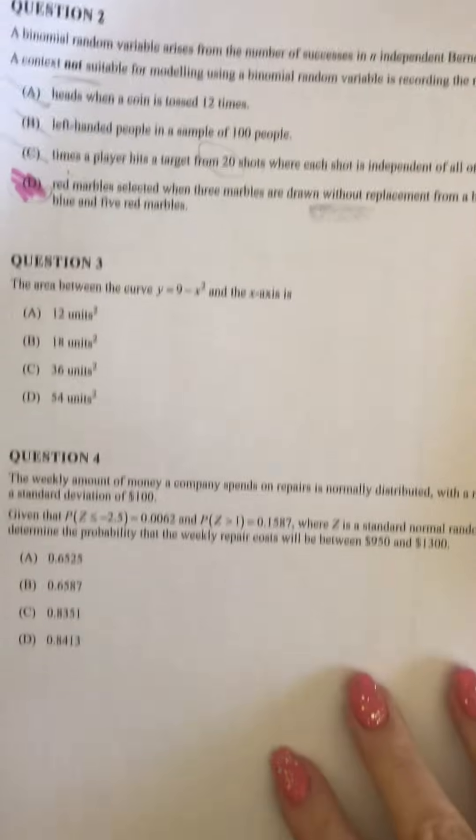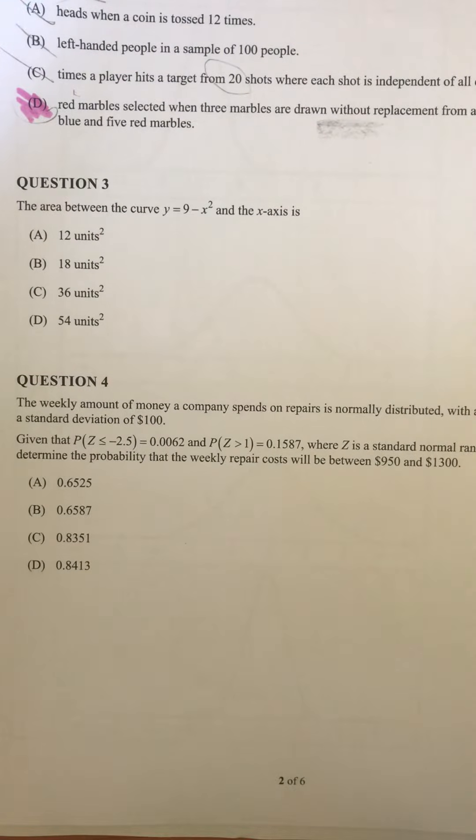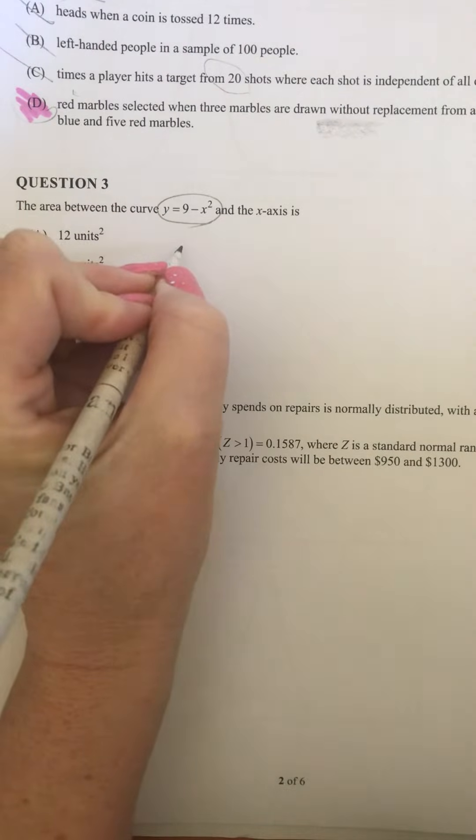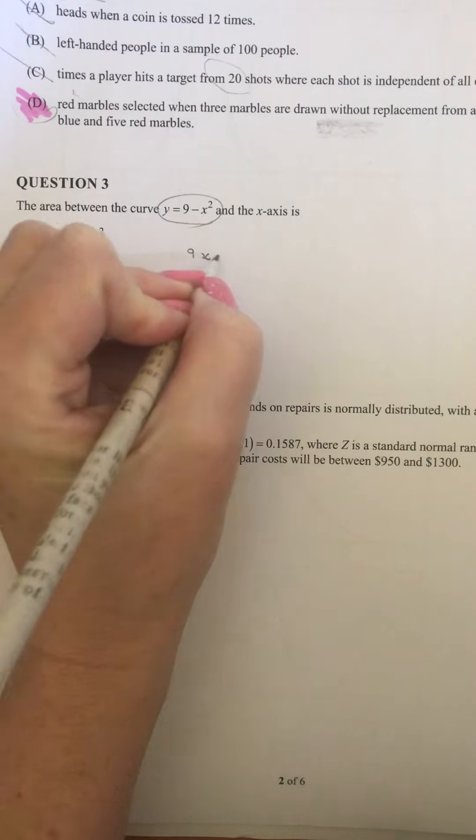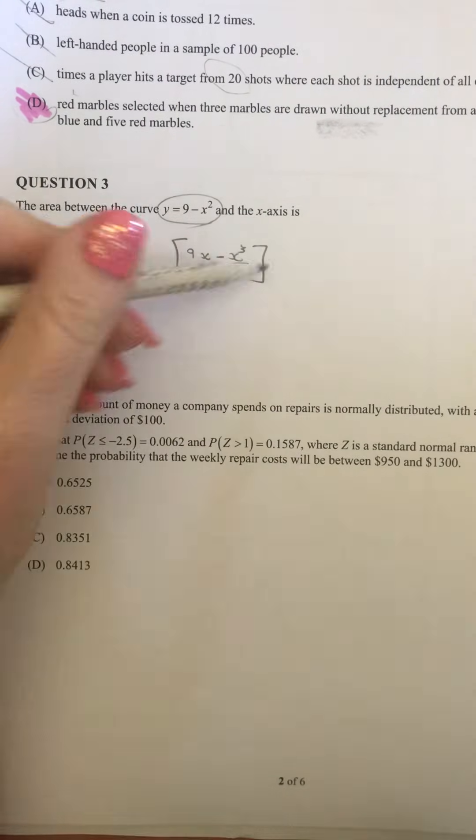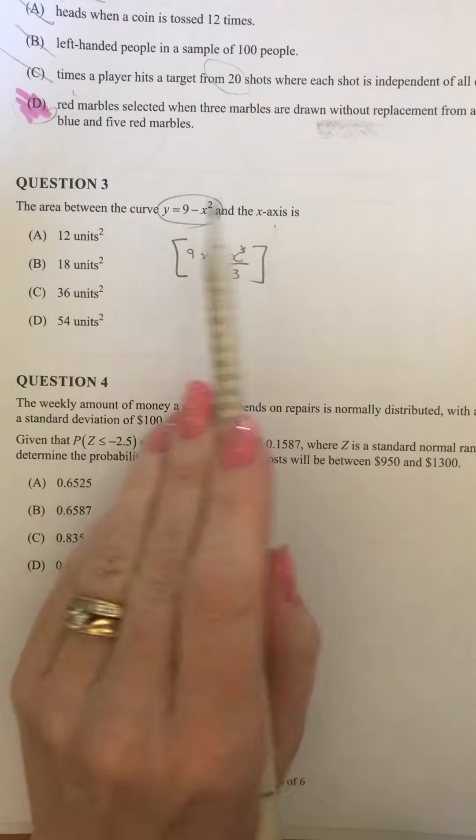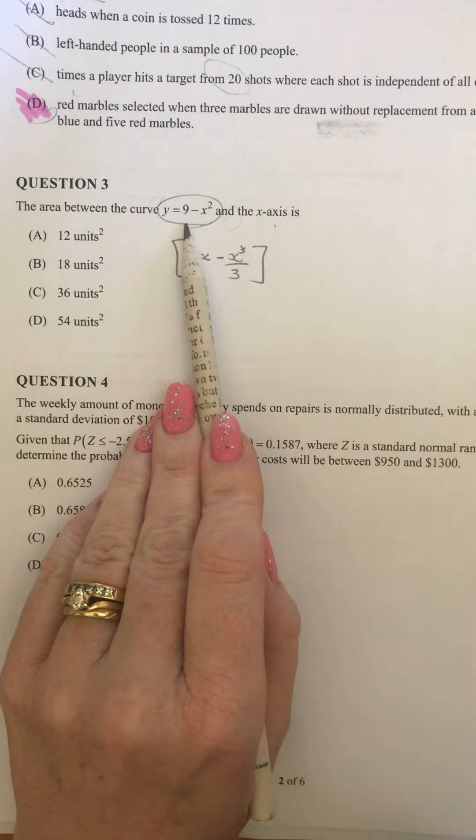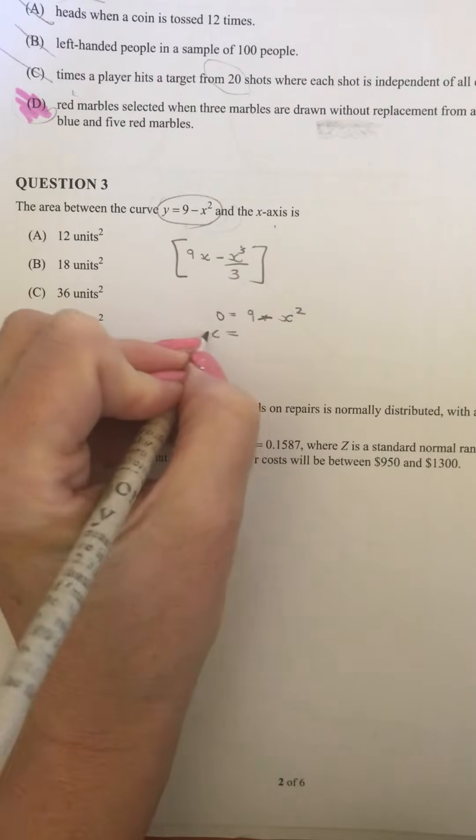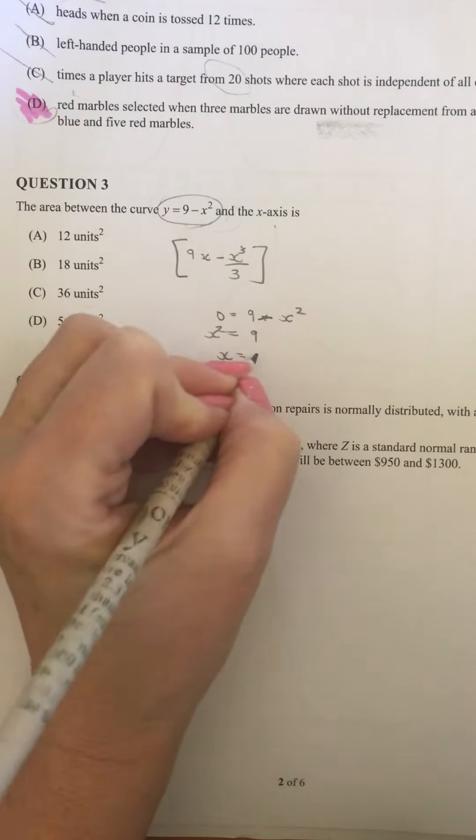For question three, you need to calculate the area between the curve. So a few things that we'll need to do there is, one, we need to find the integral of that function. So we've got our y there. So our integral will be the 9x minus x cubed on three. And we want to know what values to look between. And so because it said for the x-axis, we need to solve when y equals zero to find out those values. So we're going 0 is equal to 9 minus x squared. So x squared is equal to 9. So x must be plus or minus 3.